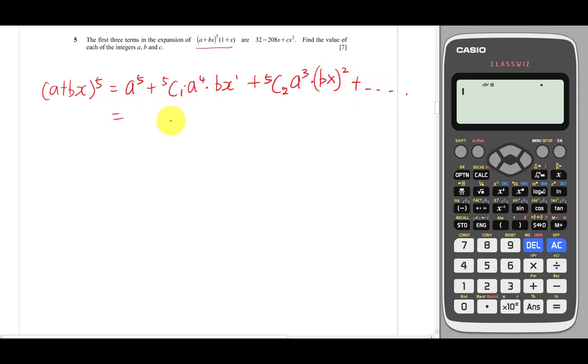Let me simplify: a^5, then 5C1 is 5, so this is 5a^4·bx. Then 5C2 is 10, so we have 10a^3·b^2·x^2, with the square for both, plus dot dot dot.